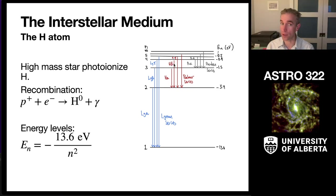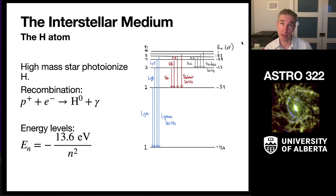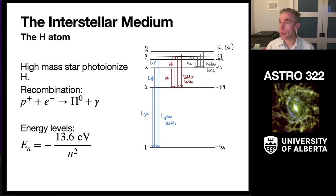The next series ending in n = 3 is the Paschen series. Then there's Brackett and Pfund, and then they stop naming them. When we look out at space, we often see these optical lines. H-alpha has a wavelength of 656 nanometers — a bright red line. H-beta is 486.1 nanometers, a nice blue line.